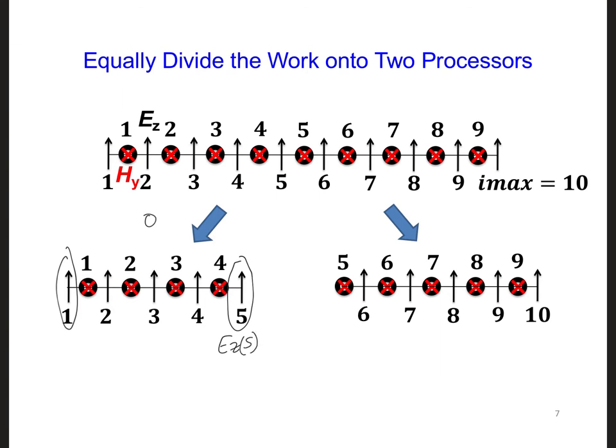For the EZ5 update, processor 0 is missing the HY to the right, which is HY5, which is over here. HY5 is on processor 1.